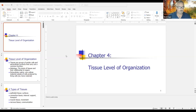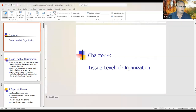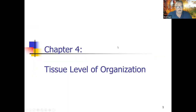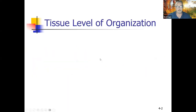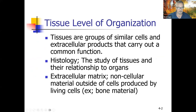I'm going to start with Chapter 4: tissue level of organization. Last time we talked about an overview of the entire text and different levels of organization. So today we're talking about tissues.